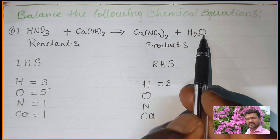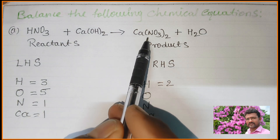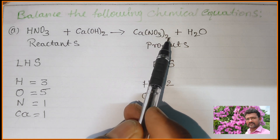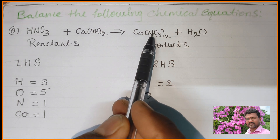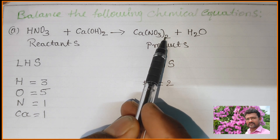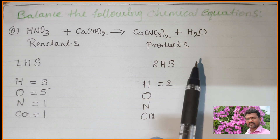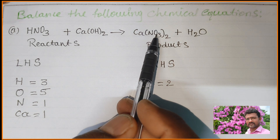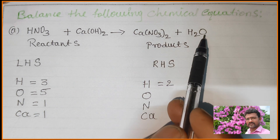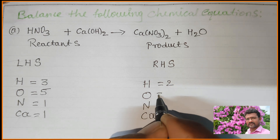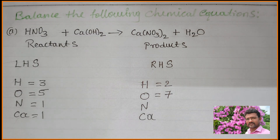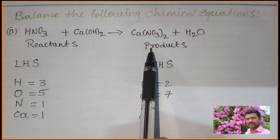On the RHS, for oxygen: in H2O there is 1 oxygen. In Ca(NO3)2, the bracket with 2 means we multiply 2 into the nitrate group NO3. So 2 times 3 = 6 oxygen. Total oxygen on RHS: 6 plus 1 = 7 oxygen atoms.